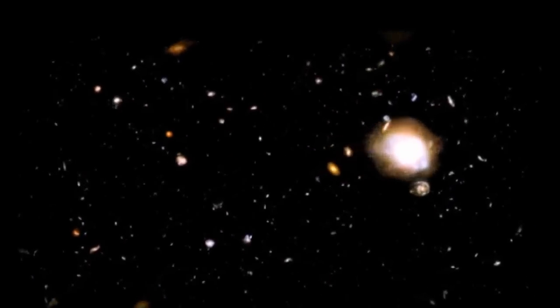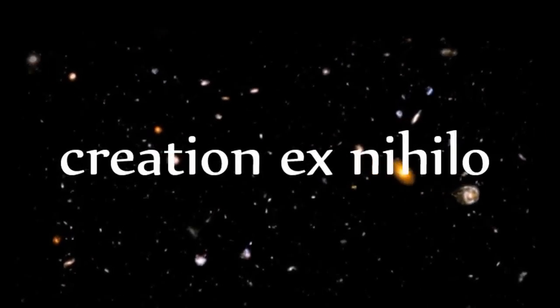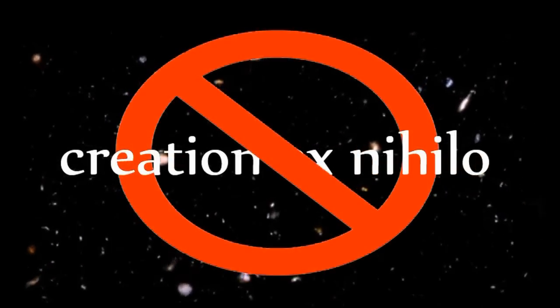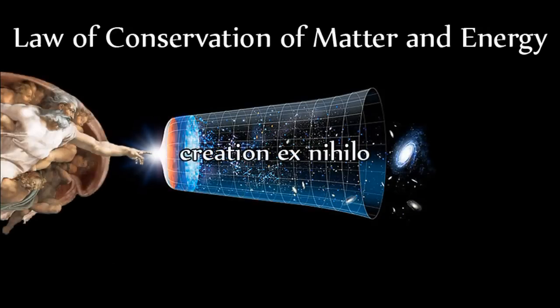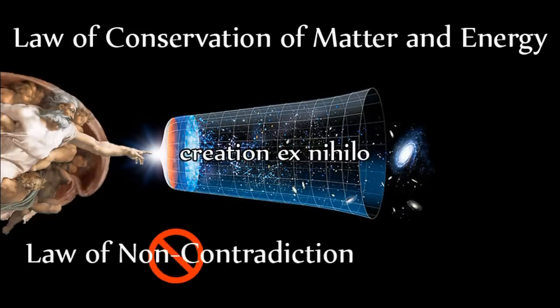The nature of a square, a circle, a human, and even a universe can never be anything other than what they are. This means for our universe, creation ex nihilo is a logical contradiction. The conservation of matter and energy is a property of the universe's nature, and to violate this nature would be to violate the law of non-contradiction, to make the nature of the universe something other than what it is.